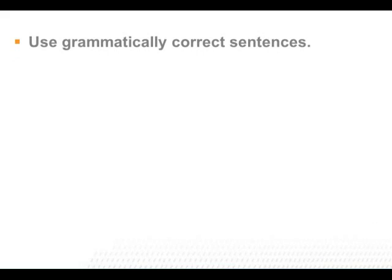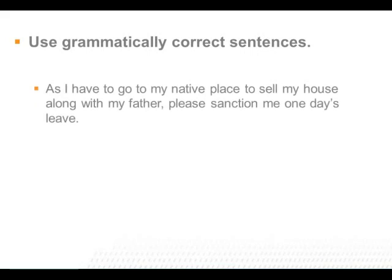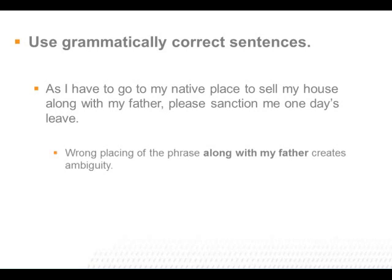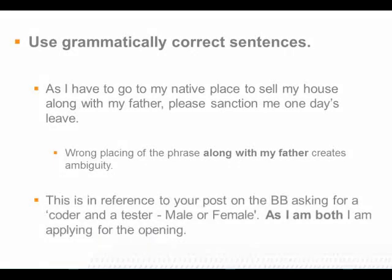Use grammatically correct sentences to avoid ambiguity. For example: 'As I have to go to my native place to sell my house along with my father, please sanction me one day's leave.' The wrong placing of the phrase 'along with my father' creates ambiguity. Another example: 'This is in reference to your post on the bulletin board asking for a coder and a tester, male or female. As I am both, I am applying for the opening.' The phrase 'as I am both' can create ambiguity.